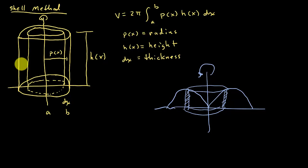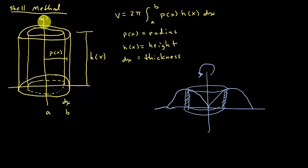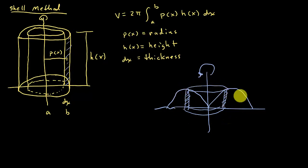The volume formula is 2π times the integral from a to b of p(x) times h(x) dx, where p(x) is the radius, h(x) is the height, and dx is the thickness. The radius is measured from the axis you're rotating about out to the thickness of the shell, and h(x) is the height of the shell.